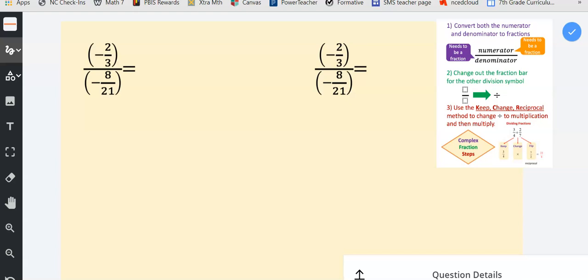Take a look at this next complex fraction problem. Negative two-thirds is being divided by negative eight twenty-firsts.